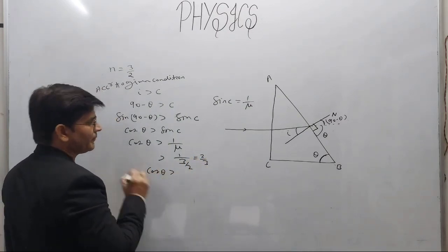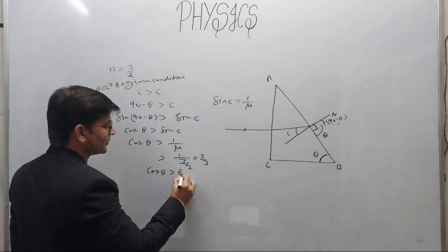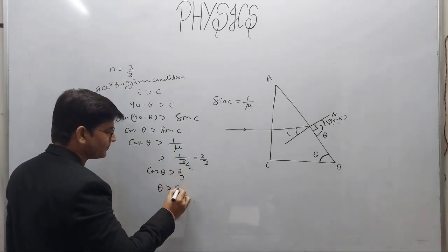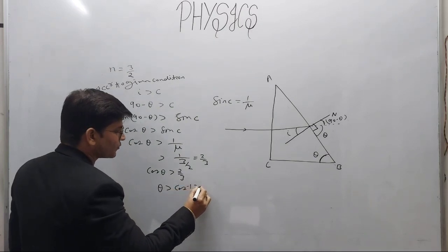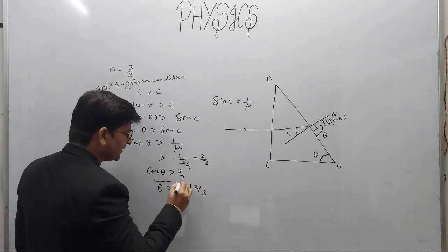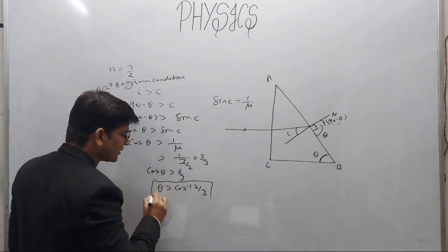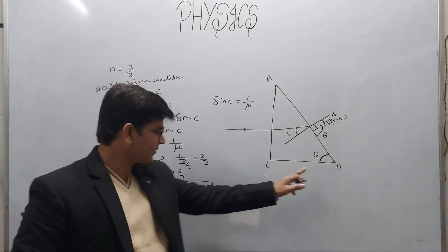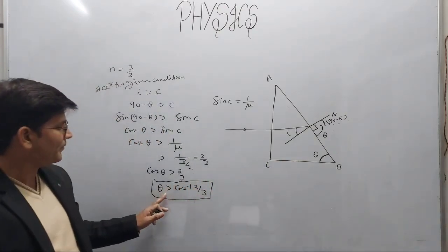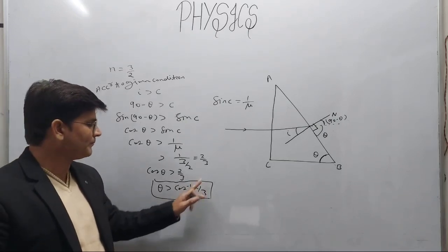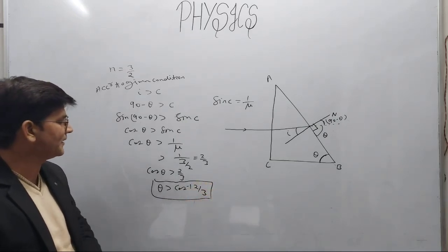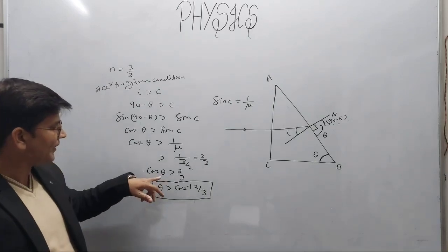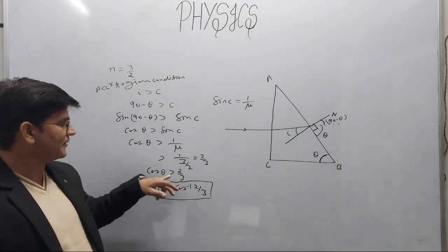Therefore cos θ should be greater than 2/3. So the value of theta is θ > cos⁻¹(2/3). In other words, the value of angle theta must satisfy cos θ > 2/3 for the given condition that this light ray will not pass through the second surface AB.